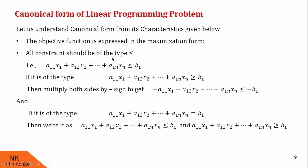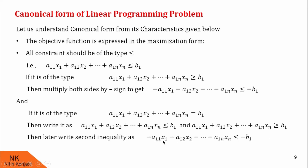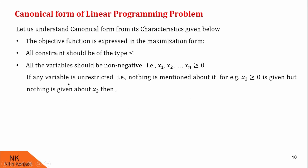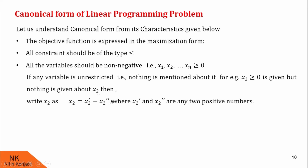The first inequality fits into this characteristic, but the second does not. So we convert it by multiplying throughout by minus sign to get minus a11x1 minus a12x2 up to minus a1nxn less than or equal to minus b1. The next characteristic says all variables should be non-negative, that is, x1, x2, ..., xn should be greater than or equal to 0. If any variable is unrestricted — for example, x1 is given greater than or equal to 0 but nothing is given about x2 — then we write x2 as x2 dash minus x2 double dash, where x2 dash and x2 double dash are any two positive numbers.